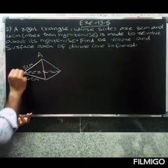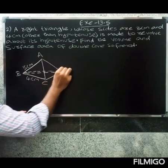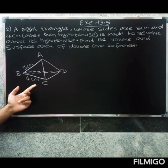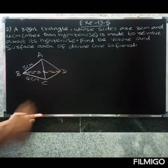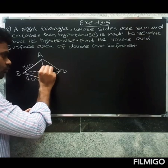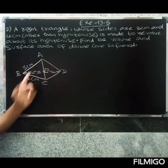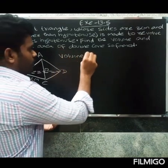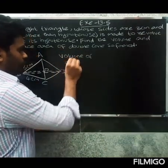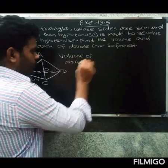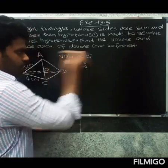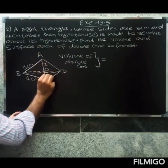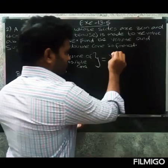So AB is 3 centimeters and BC is 4 centimeters. Now first, the volume of the double cone. Volume of double cone equals volume of first cone plus volume of second cone.